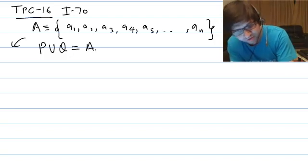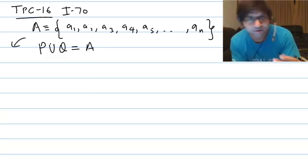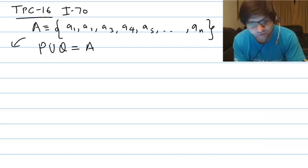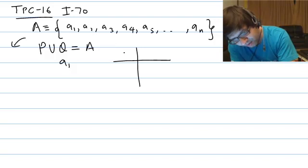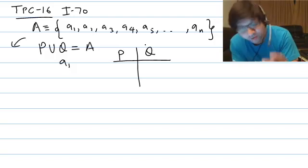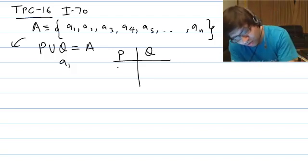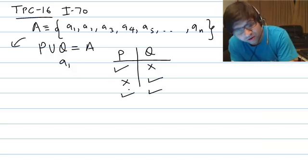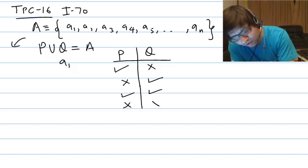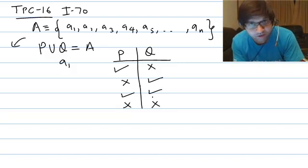The way we solve TPC 16 problems is by considering each element individually. For element A1, we have the following choices — this is set P and this is set Q. What can happen to element A1 is: it can go to set P but not Q, it can be selected in Q but not P, it can be selected in both P and Q, or it is neither selected for P nor for Q. So these four things can happen for element A1.